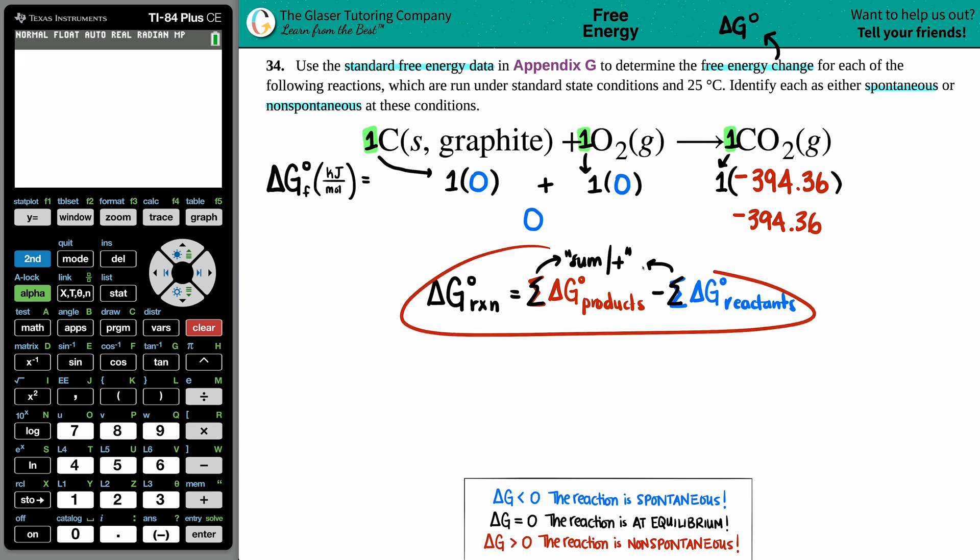ΔG° for the whole entire reaction is products (-394.36) minus zero. If we want to, we could plug it into the calculator, but I think we got it from here. ΔG°rxn is just -394.36. The units would be kilojoules.